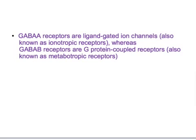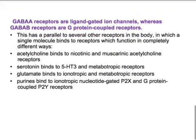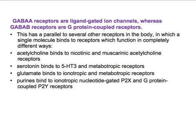The GABA A receptors are ligand-gated ion channels, also known as ionotropic receptors, whereas the GABA B receptors are G protein-coupled receptors. Note the difference: GABA A receptors are ligand-gated ion channels, whereas GABA B receptors are G protein-coupled receptors. This has a parallel to several other receptors in the body.